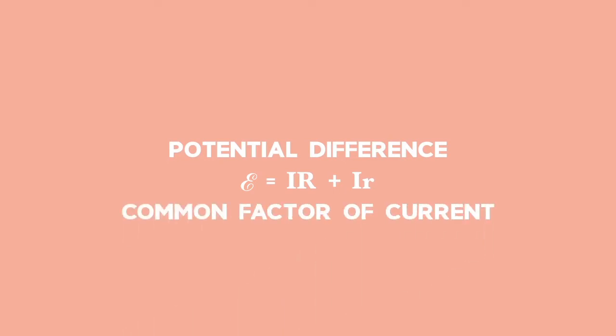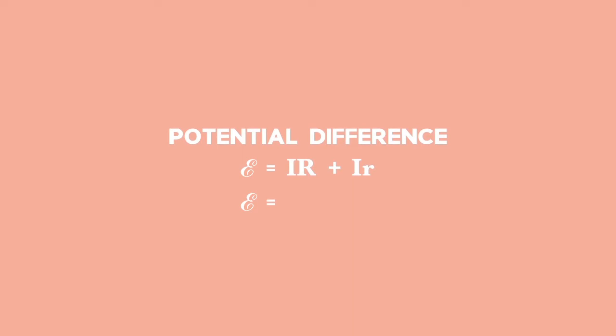Remembering that the potential difference is equal to current times resistance, we can substitute for voltage external as current times external resistance, and for voltage internal as current times internal resistance. We can take out the common factor of current, and thus the EMF is equal to the current times the sum of the external and internal resistance.